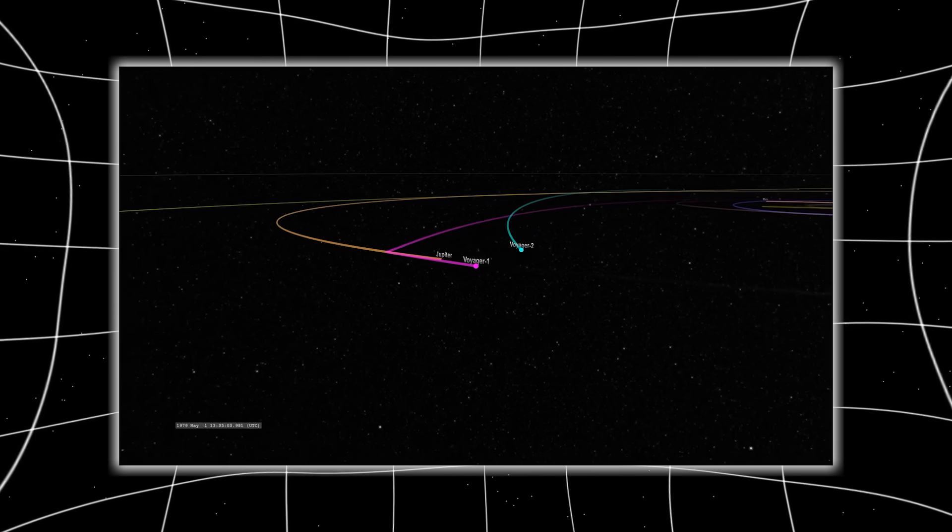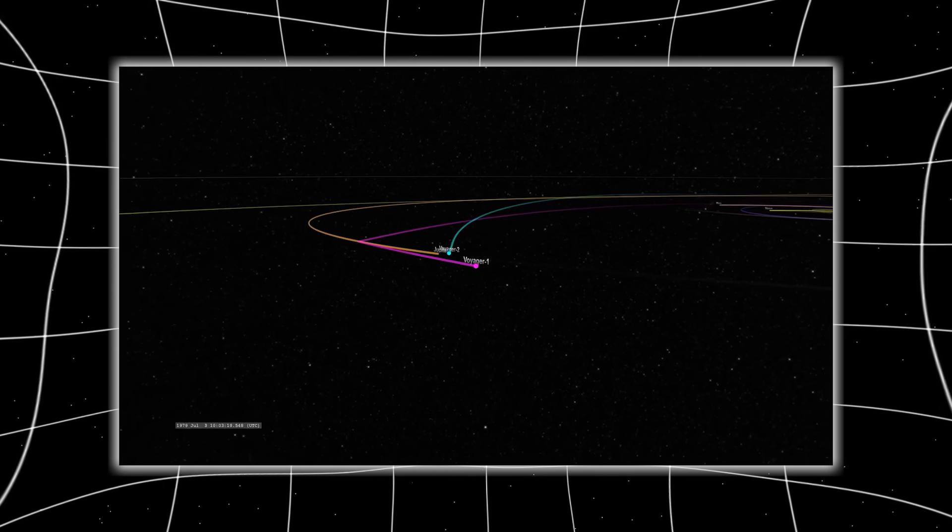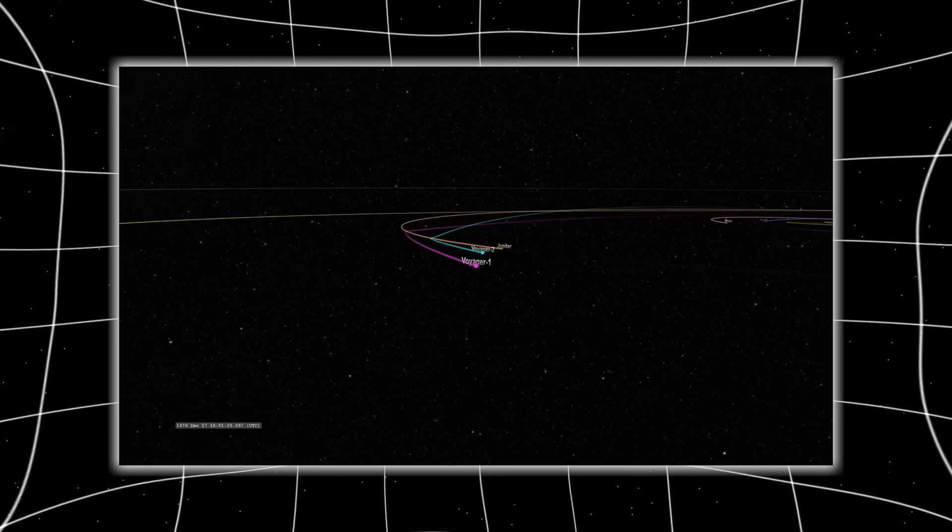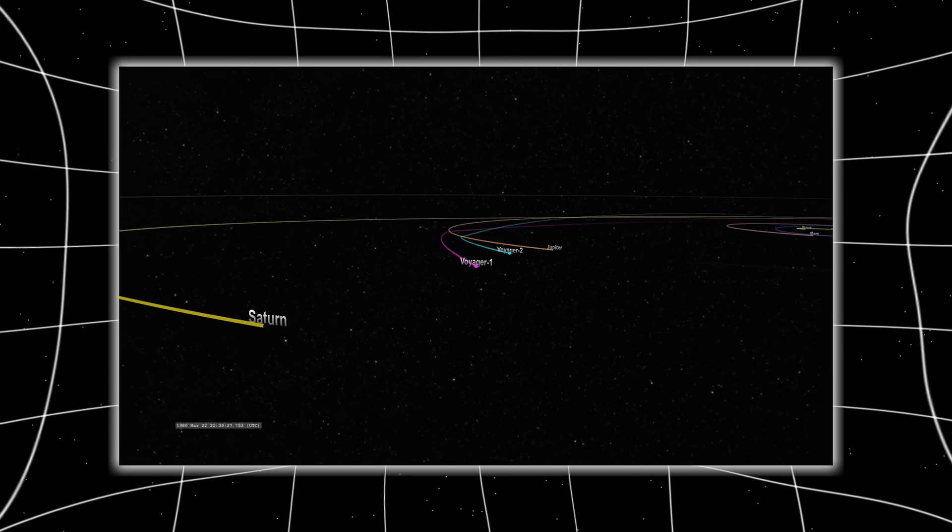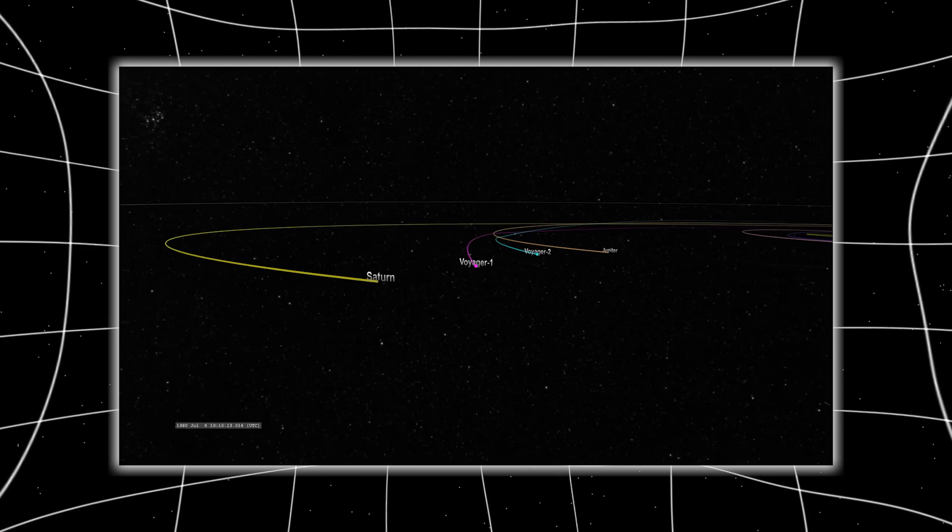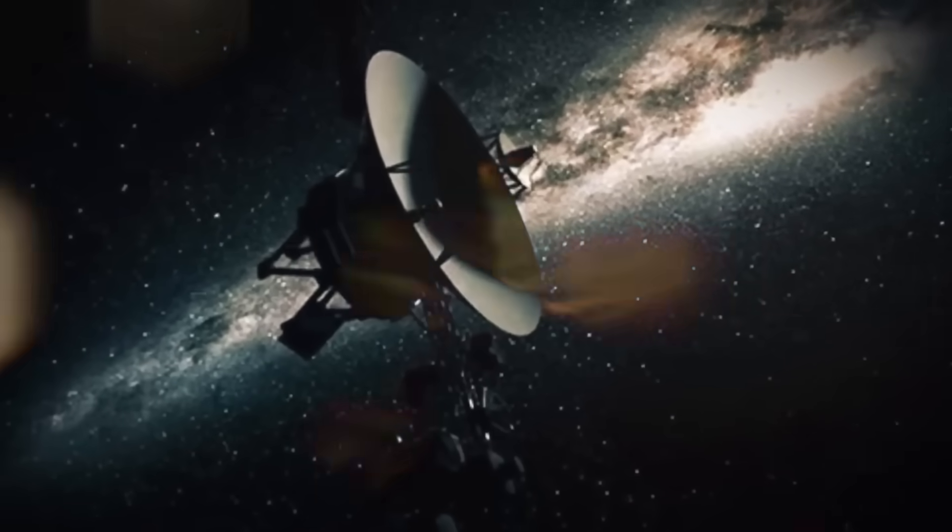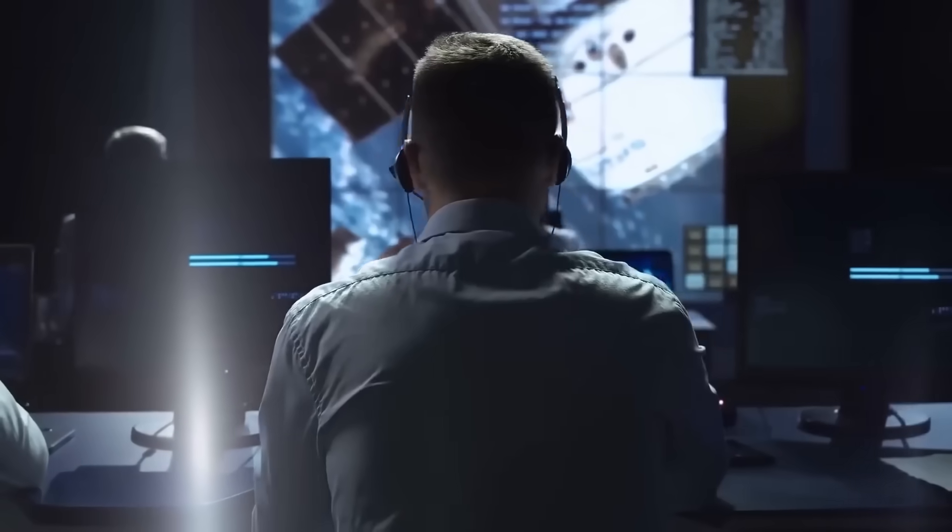Engineers confirmed it. Voyager 1 had executed a maneuver it wasn't programmed to perform, with no active propulsion, no command sent. The turn wasn't random. It aligned with the pulsar grid received days before, a precise angle down to the decimal, as if Voyager had received coordinates and accepted them.